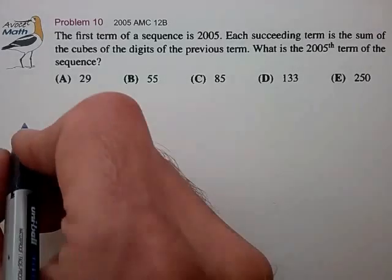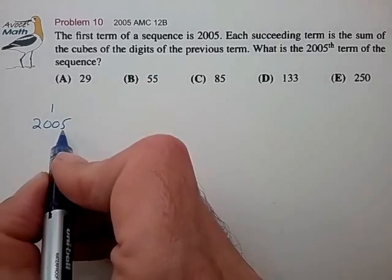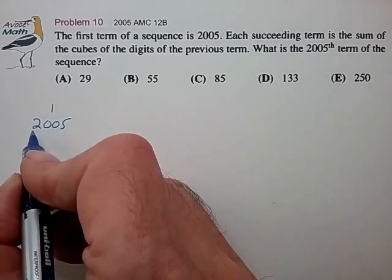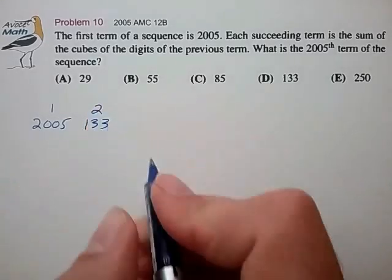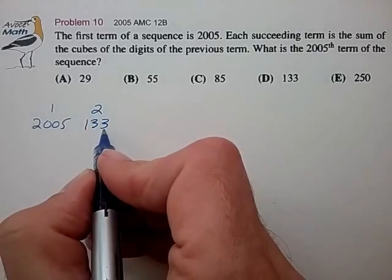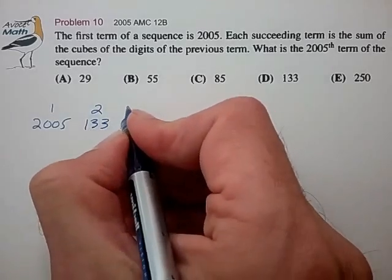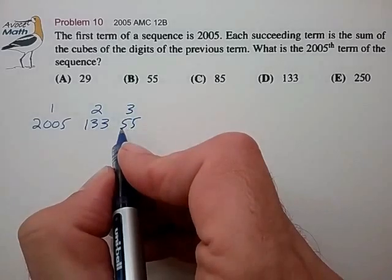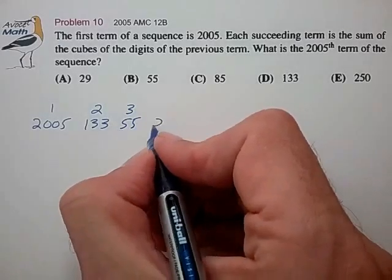So starting with 2005 as our first term, the cube of 5 is 125 plus the cube of 2 is 8, giving us 133. That's our second term. 3 cubed is 27 times 2 is 54 plus 1 is 55. Third term 55, 5 cubed is 125 times 2 is 250.